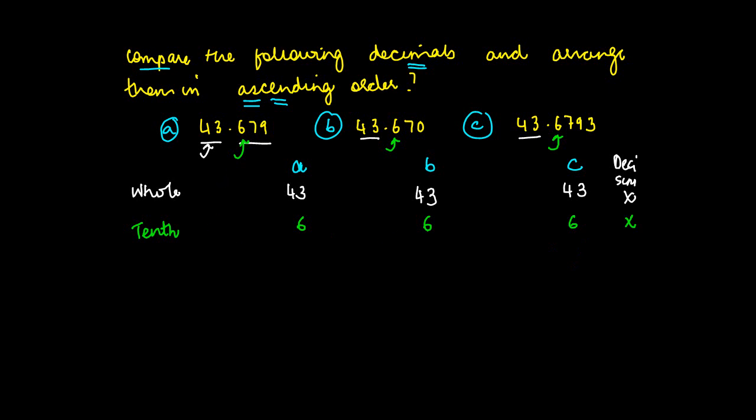Now we move on to the hundredth part. The hundredth value in a is 7, in b again it is 7, and in c also it is 7. Since these are equal in all three, we can't compare which one is the larger one.